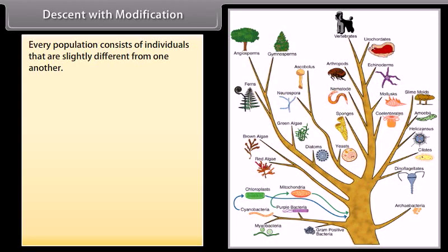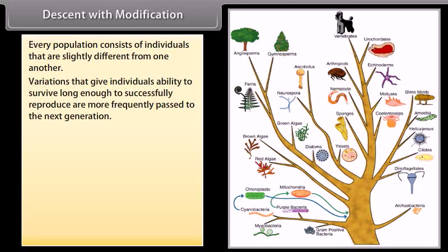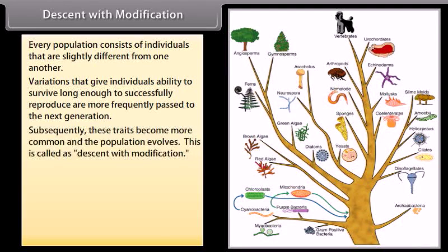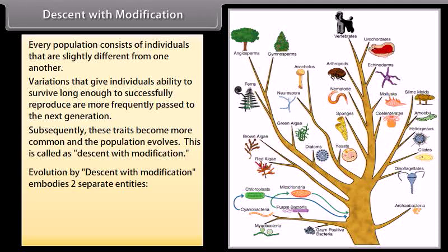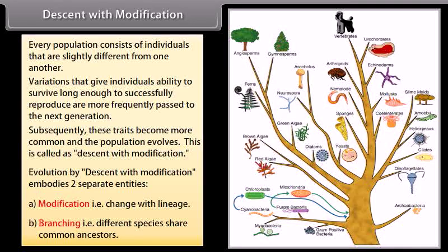Every population consists of individuals that are slightly different from one another. Variations that give individuals the ability to survive long enough to successfully reproduce are more frequently passed to the next generation. Subsequently, these traits become more common and the population evolves — this is called descent with modification. It embodies two entities: A. Modification, that is, change with lineage; and B. Branching, that is, different species share common ancestors.